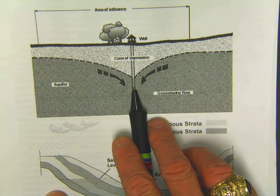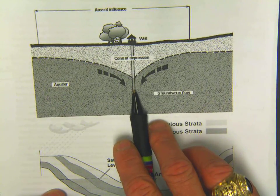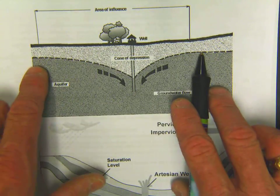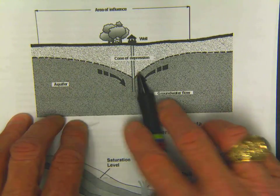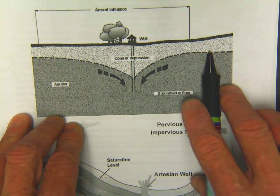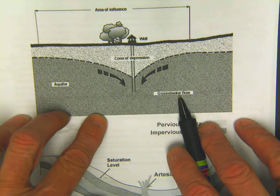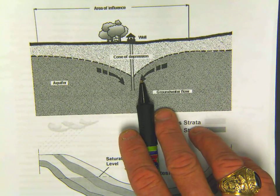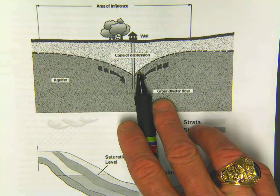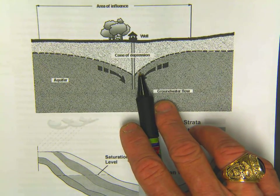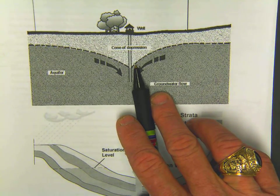The water is basically being depleted in a concentrated form around the well, so it causes this particular cone shape. It's not a uniform depression of the water table, but it's concentrated in one area. Too much groundwater extraction — if we take this important resource out too quickly — can be a serious problem.